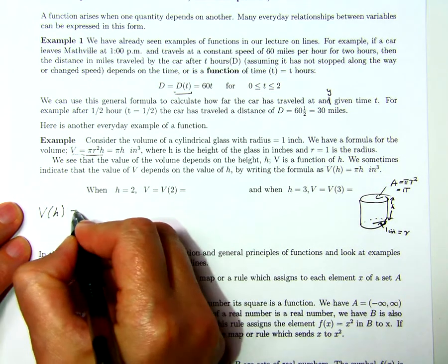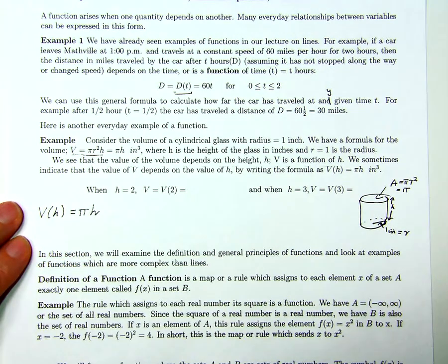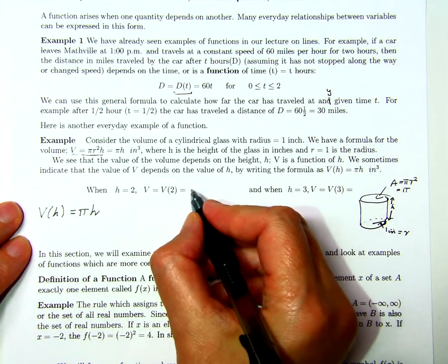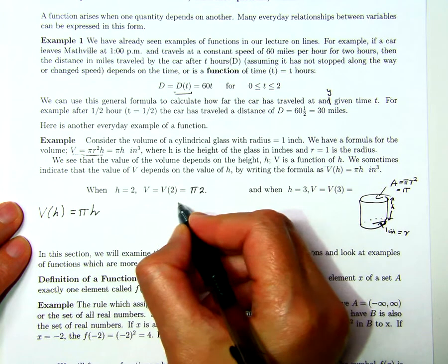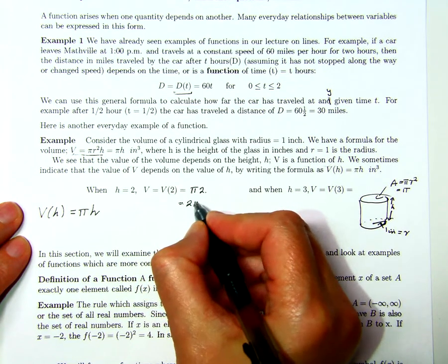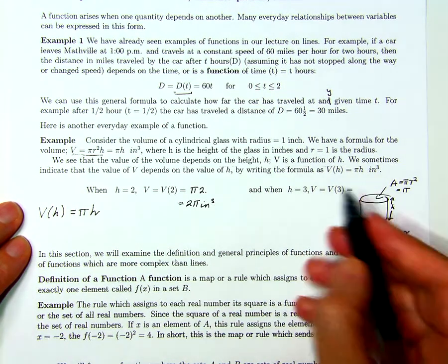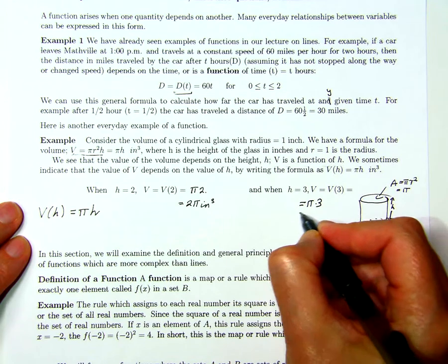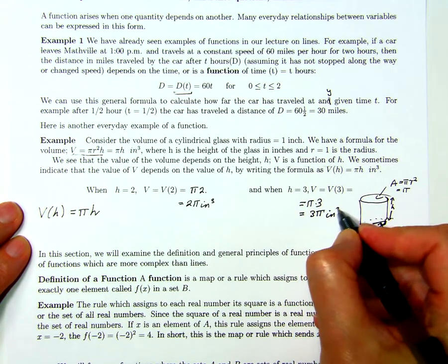For example, if the height was two, then the volume would be π times two or 2π in cubic inches. And if the height was three, then the volume would be π times three, or usually we put the three in front of the π, and that again is cubic inches.